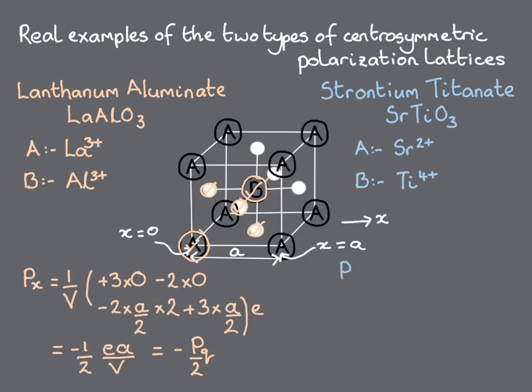When we repeat the procedure for strontium titanate with the same choice of basis atoms, we obtain a polarization value of zero, indicating that strontium titanate has the other polarization lattice type.